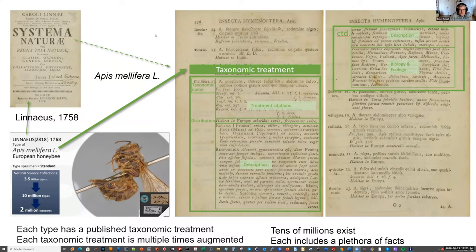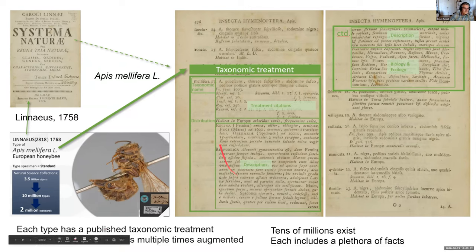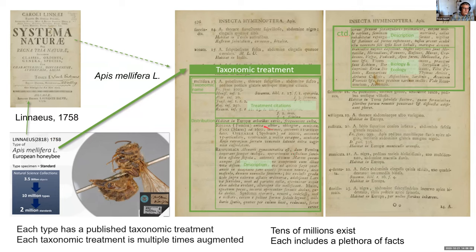These findings are about taxa, communicated in sections of text in the way Linnaeus started in 1758. Linnaeus created the first book including all known species at that time. He had a very structured way to communicate his findings: a nomenclature element introducing the name, treatment citations referring to earlier work, a description, and a biology and ecology section referring to pollinators and the pollinated plants.